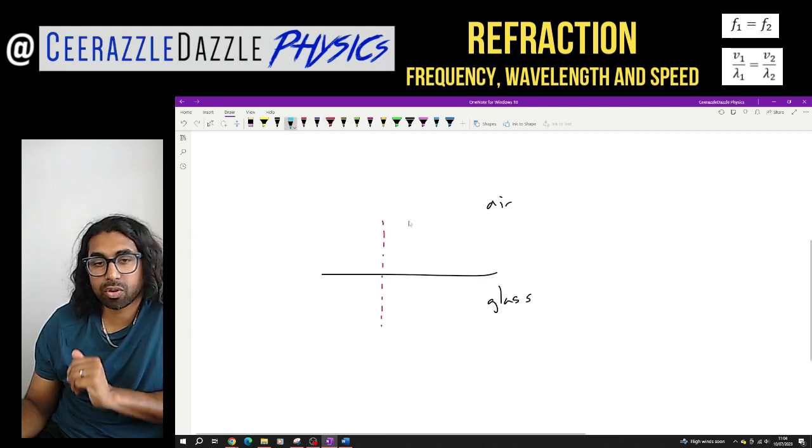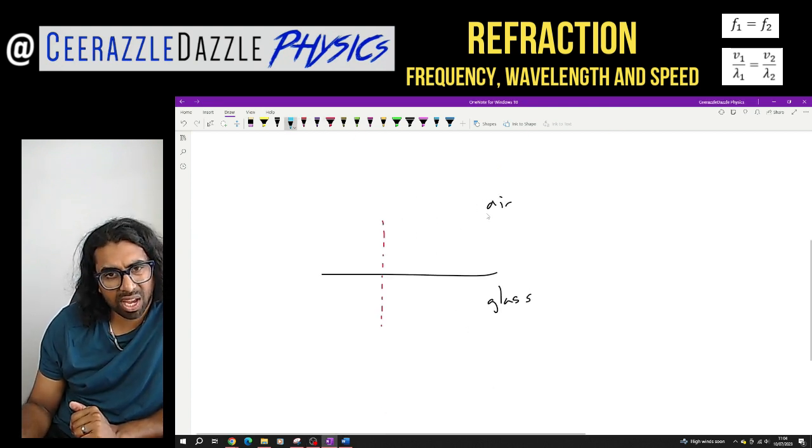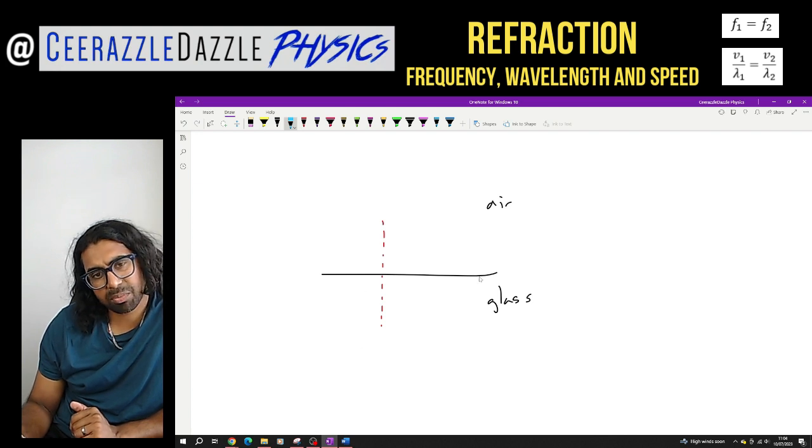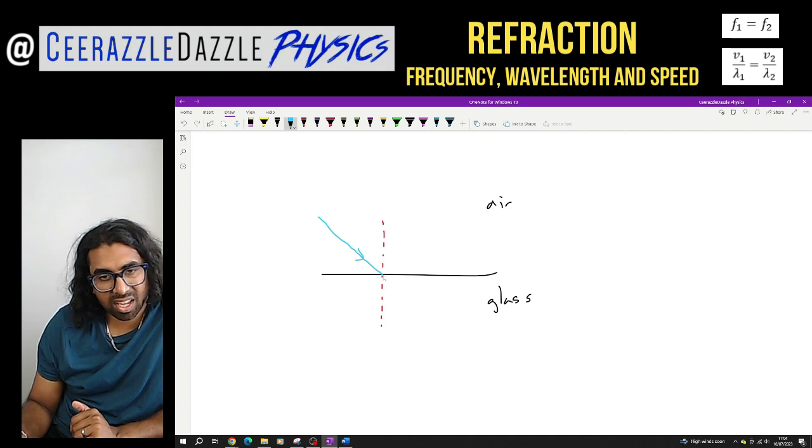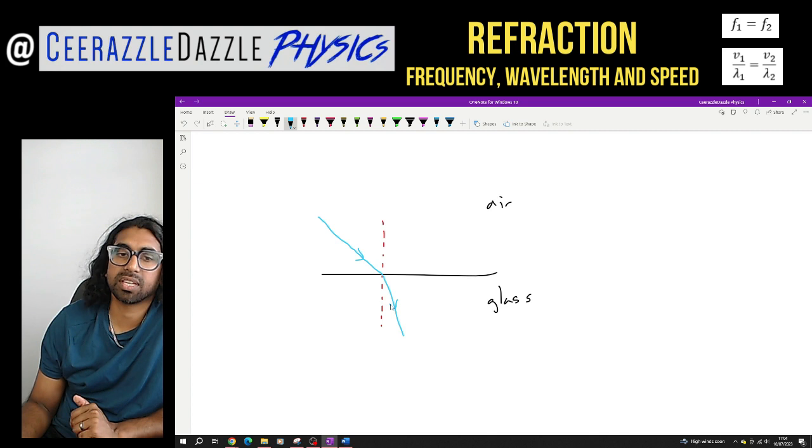Okay so look over here we've got air and we've got glass. Air is my first medium, glass is my second medium over here and here's the normal to the surface. Don't forget the normal is at 90 degrees to the surface. We know that a ray of light will travel and hit this point over here and refraction will take place.